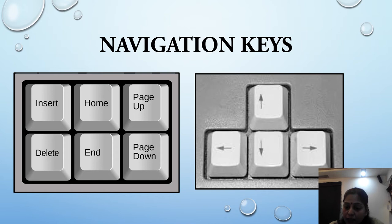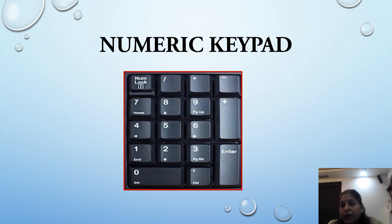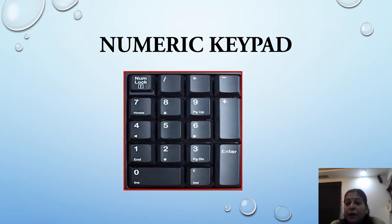The fifth type is the numeric keypad. The numeric keypad arranges the numerals 0 through 9, the arithmetic operations like addition, subtraction, multiplication, and division, and the decimal point — as they would appear on a calculator or adding machine. It is placed on the right side of the keyboard and is used for entering numbers at a fast speed.